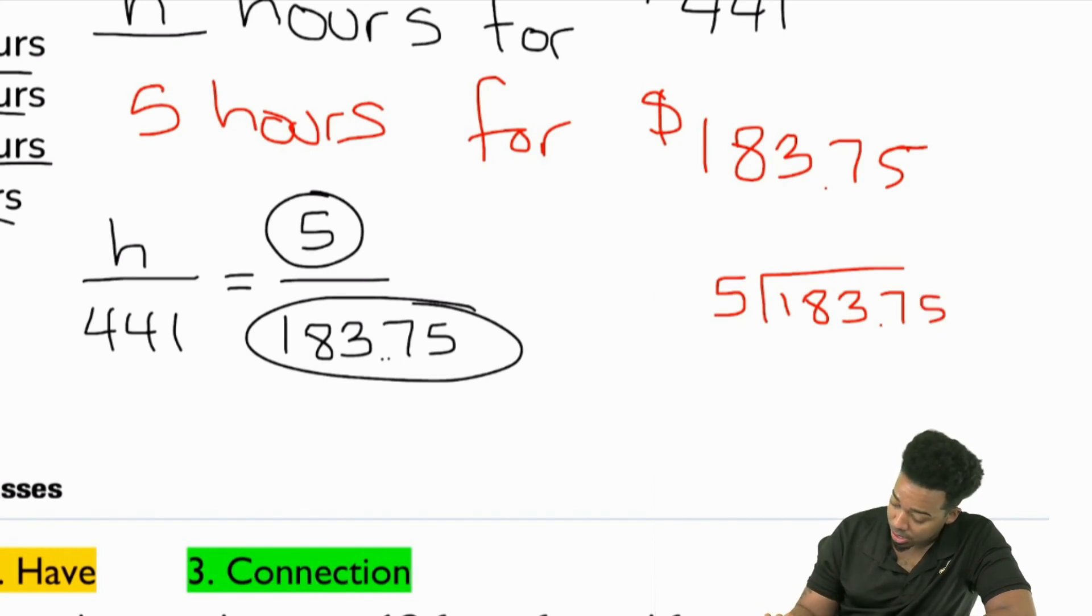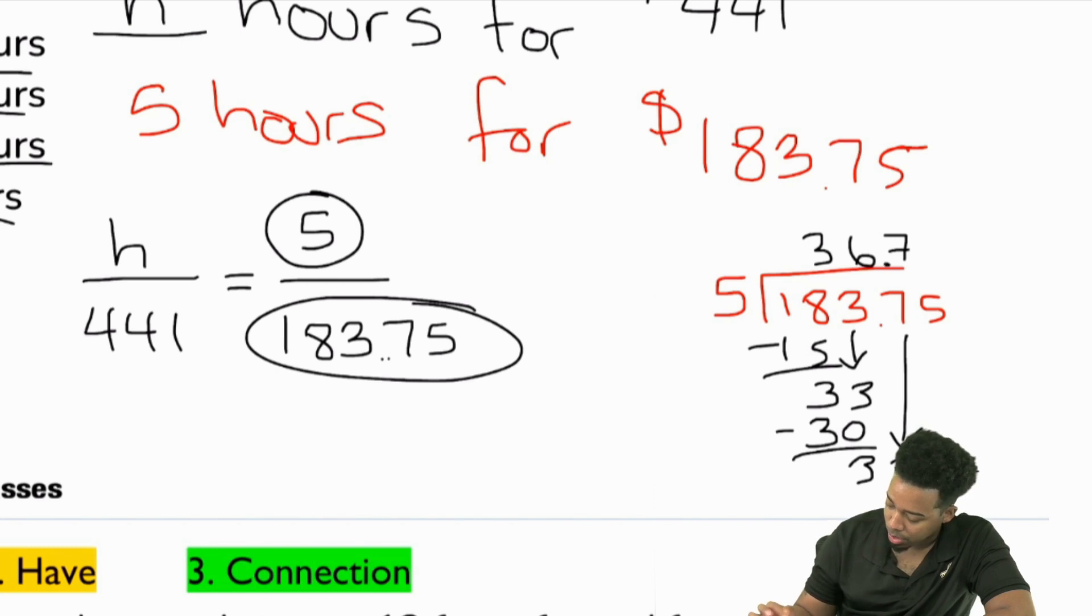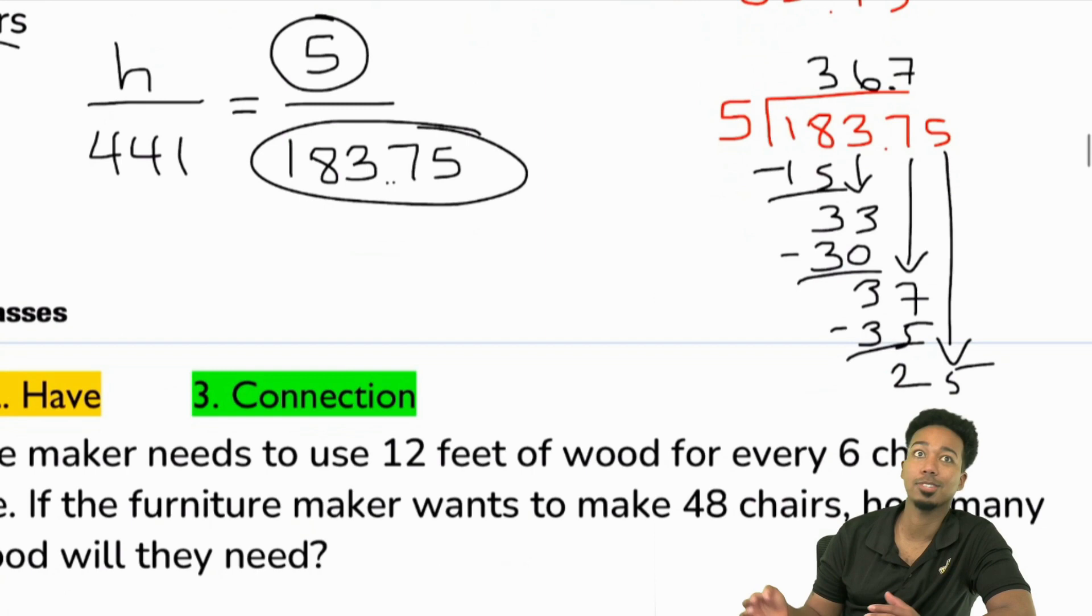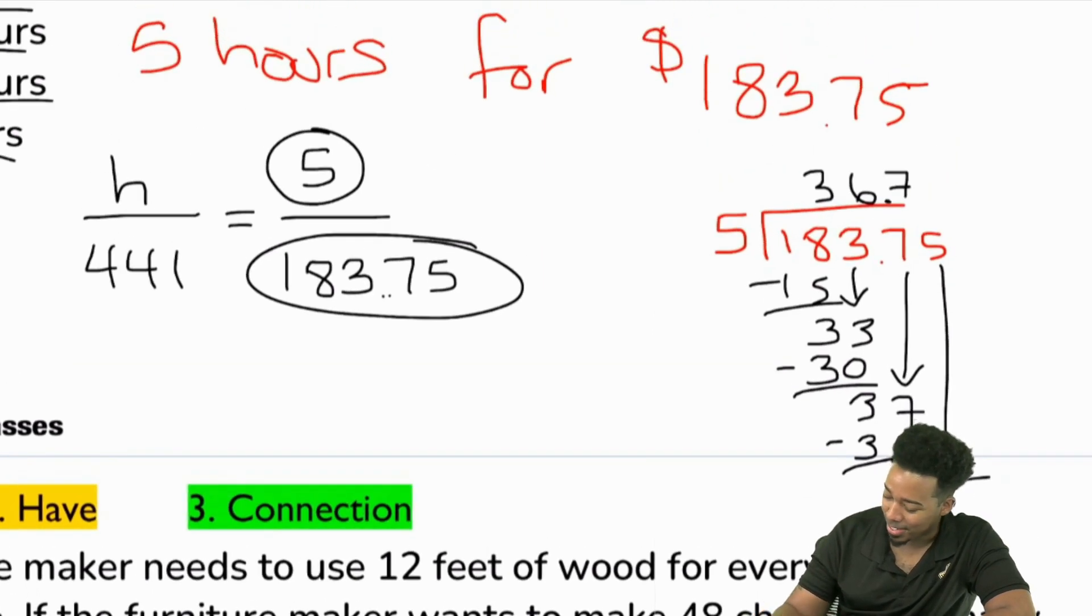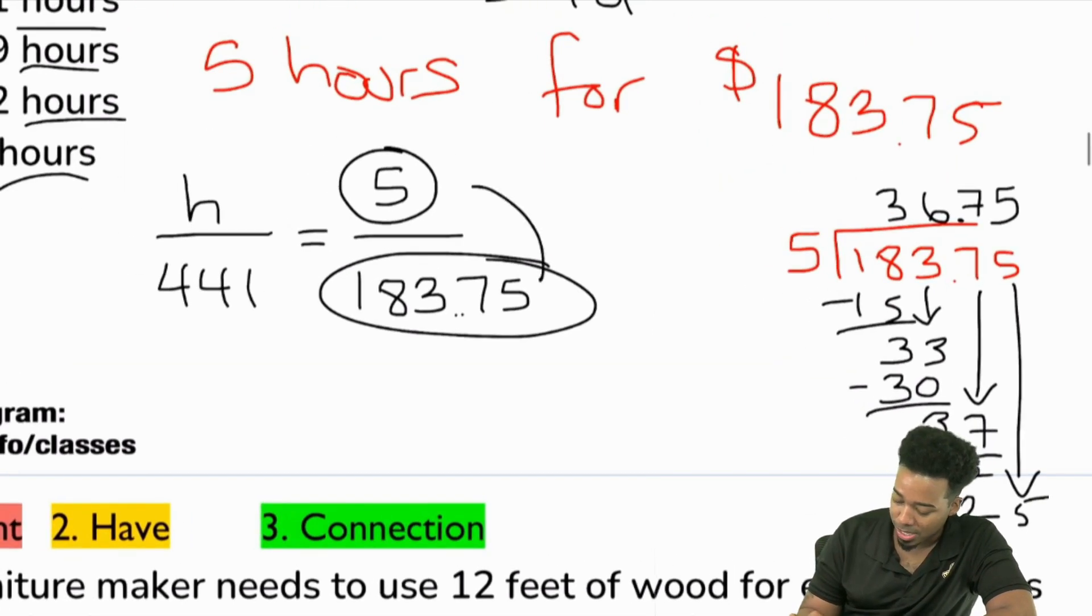Five goes into 18 three times. So that'll be minus 15. That's three. Bring that three down. Five goes into 33, that'll be six times. Subtract 30. That's a three. Bring that seven. Five goes into 37 seven times. Put that decimal place right where it belongs. So that'll end up being minus 35. Then we have ourselves a two and a five. And so that'll end up being a five right there. But nonetheless, we simplify this right here. We have H over 441 equals one over 36.75, $36 and 75 cents.